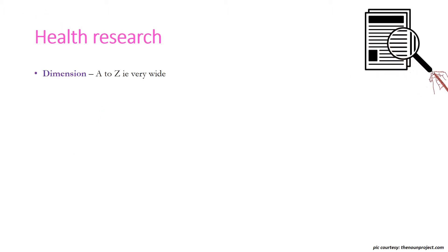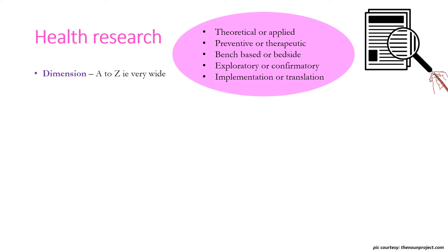Health research has a very wide range — from A to Z. It can vary from being purely theoretical to having application. It can be based on prevention or treatment. It can be done in a lab or on the patient. It can explore something unknown or confirm what is already known. Results can be directly implemented or translated into clinical applications.